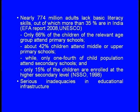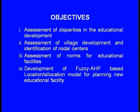Further, only 66 percent of children of the relevant age groups attend primary school, about 42 percent attend upper or middle primary school, while only one-fourth of the child population attend secondary schools and only 15 percent are enrolled at higher secondary level, as per an NSSO study of 1998. The reason behind this could be attributed to serious inadequacies in educational infrastructure. So in this study, our objectives are: assessment of disparities in educational development, assessment of village development and identification of nodal centers, assessment of norms for educational facilities, and development of a fuzzy AHP-based location allocation model for planning new educational facilities.